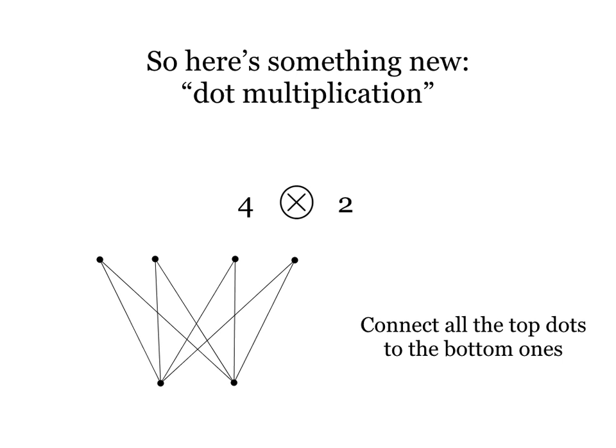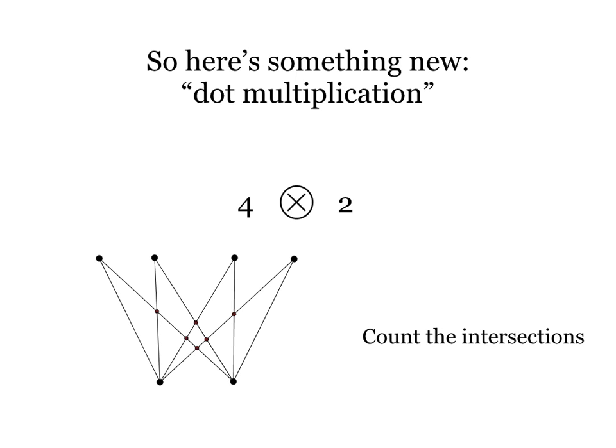And then I'm going to look at all of the points where those line segments intersect, and I'm going to count the intersections. So if I count those intersections, one, two, three, four, five, six, the answer is six. And that's how dot multiplication is going to be defined.